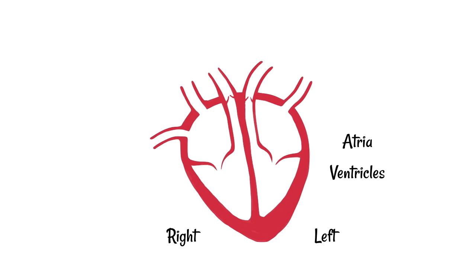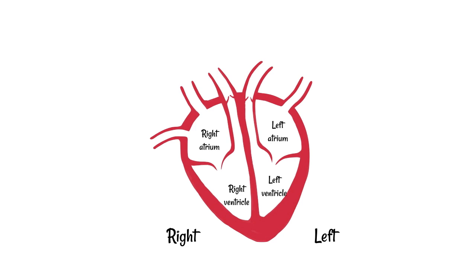There are four chambers to the heart. Two of them are the atria and two of them are the ventricles. The atria are at the top and the ventricles are at the bottom, and they're just labelled as to which one is on the left and which is on the right. It's easy to remember which is at the top and the bottom, because at the bottom of the heart you can almost envisage a V shape — V for ventricles are at the bottom.